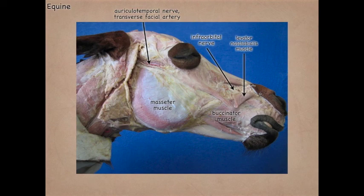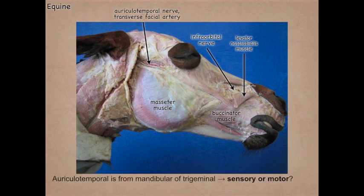Remember the auriculotemporal nerve is a branch of the mandibular nerve of the trigeminal — so is that going to be sensory or motor? Remember the trigeminal is in general sensory, except the mandibular nerve gives motor to the muscles of mastication.